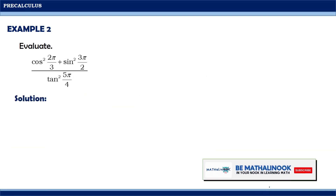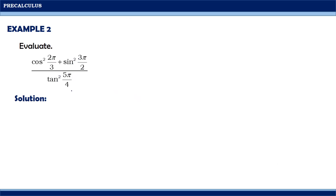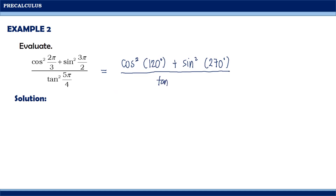Let us have another example. Evaluate: cos²(2π/3) + sin²(3π/2), all over tan²(5π/4). Converting these angles to degree measure: 2π/3 = 120 degrees, 3π/2 = 270 degrees, and 5π/4 = 225 degrees. So we have cos²(120°) + sin²(270°), all over tan²(225°).